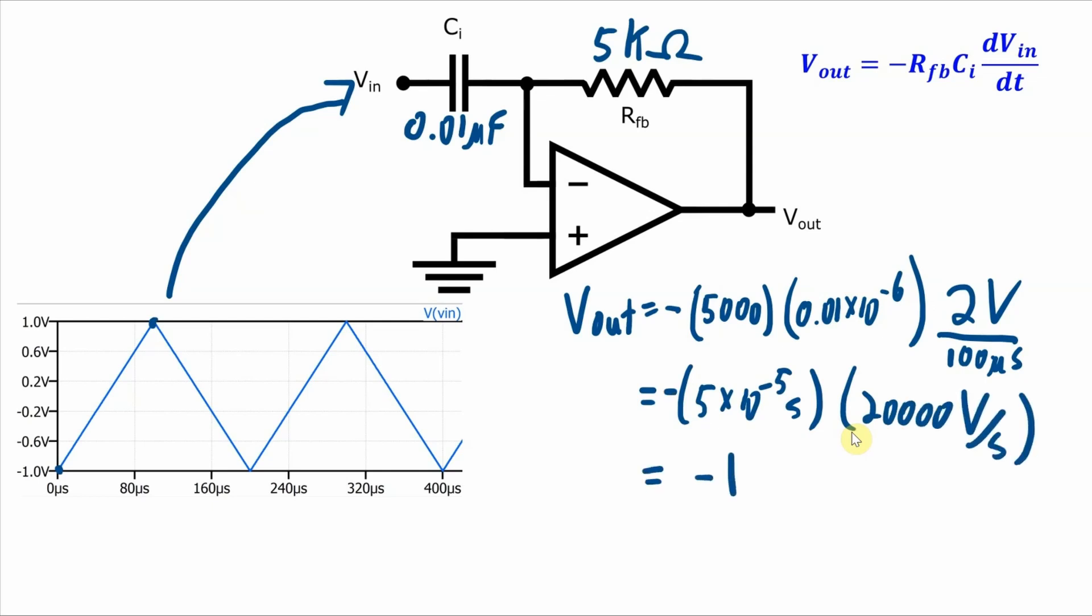This gives you minus one volt. So for this time period from zero to a hundred microseconds, Vout will be at minus one volt.